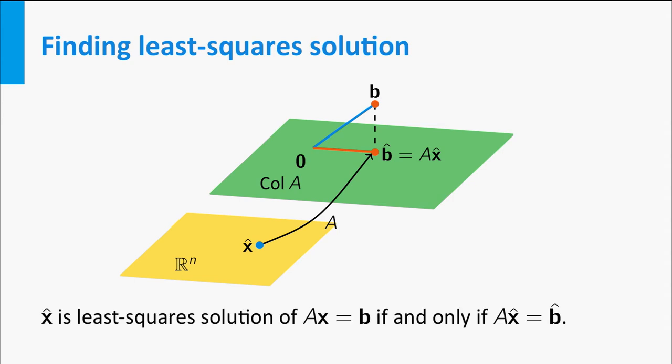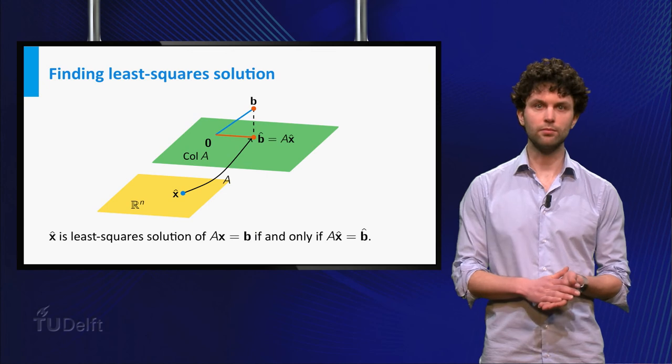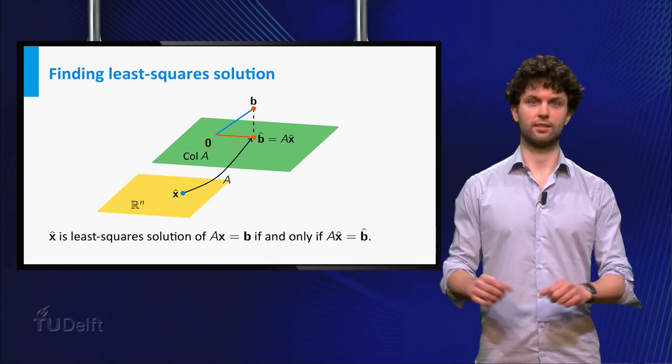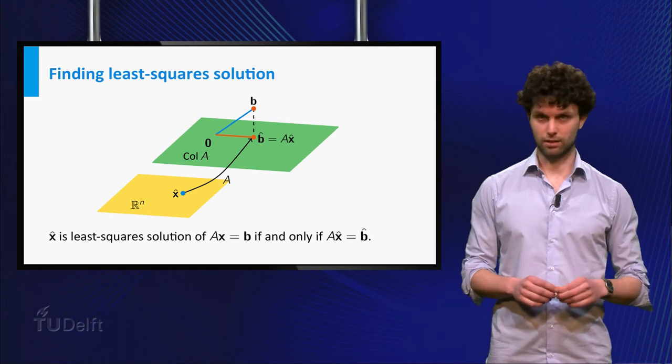In other words, the set of all least-square solutions of the system A times x is equal to b is the set of solutions of the modified system A times x is equal to b-hat. Note that the modified system is always consistent, because b-hat lies in the column space of A.